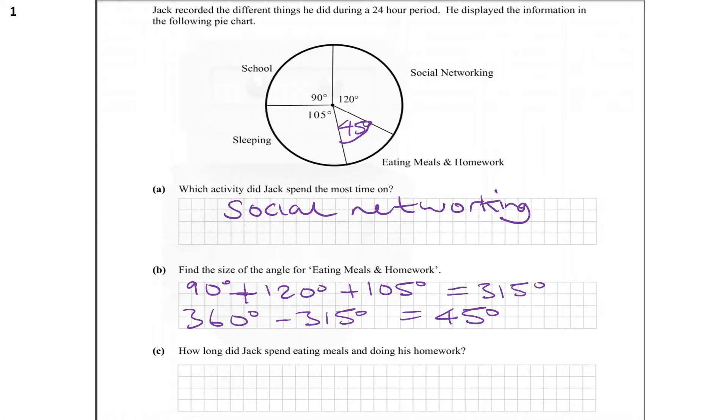Now how long did Jack spend eating meals and doing his homework? So what portion of the day, the 24-hour period, was given to eating meals and homework? Well, we know it's 45 degrees out of 360 degrees, which simplifies to 1 eighth. So 1 eighth of 24 hours is equal to 3 hours. So that's the first question.